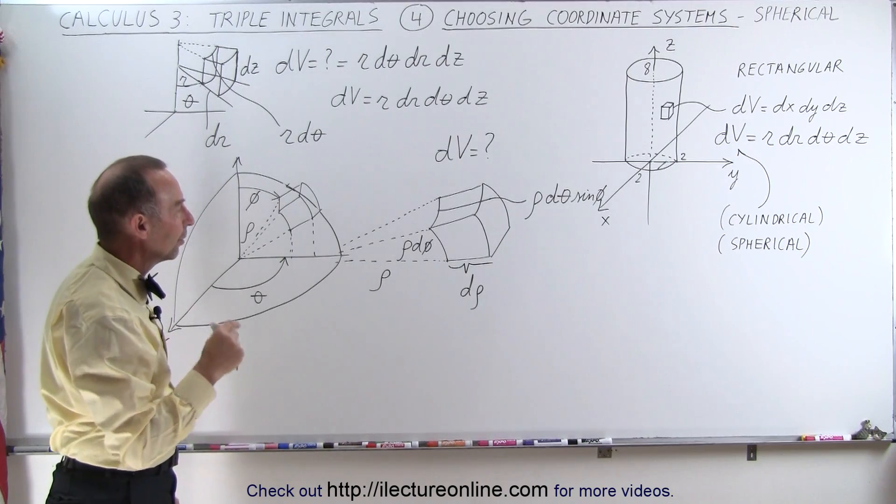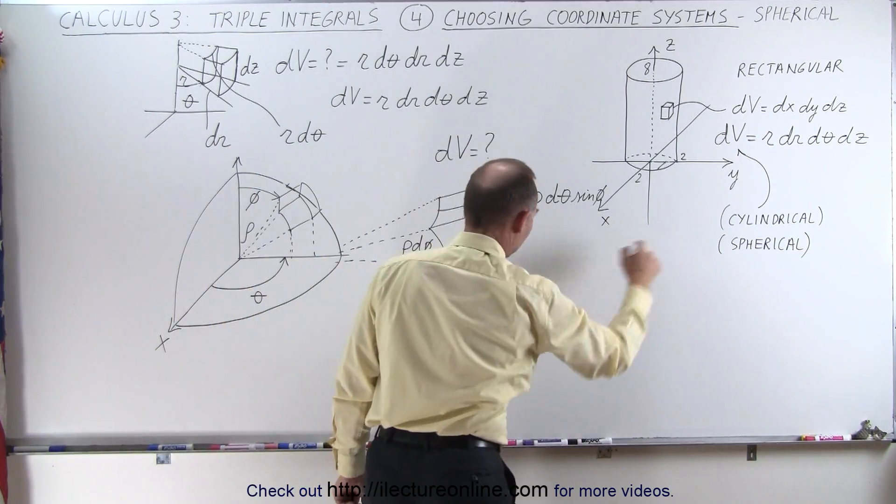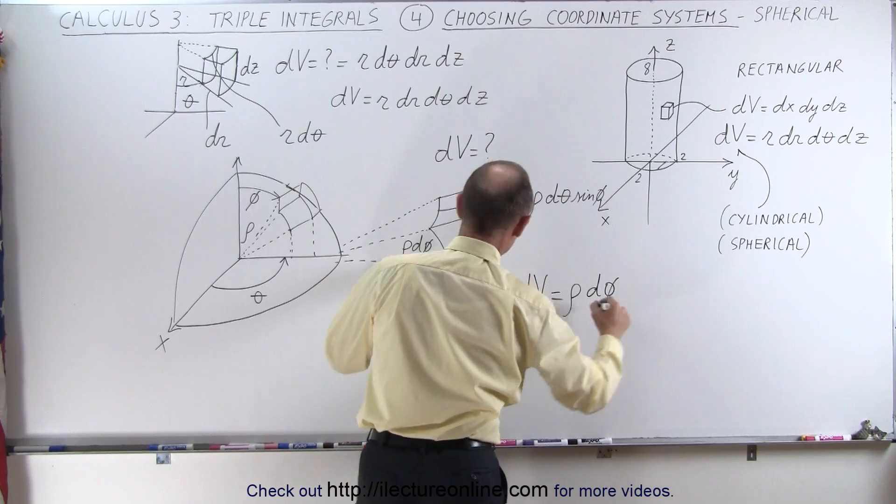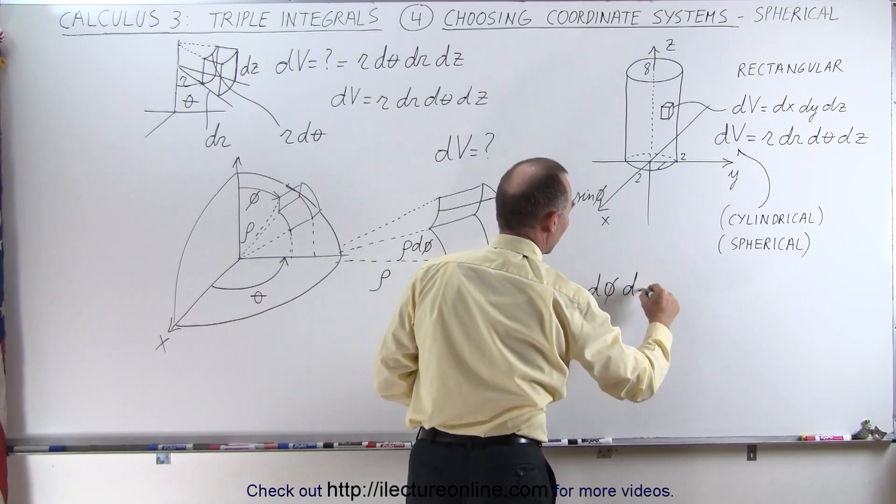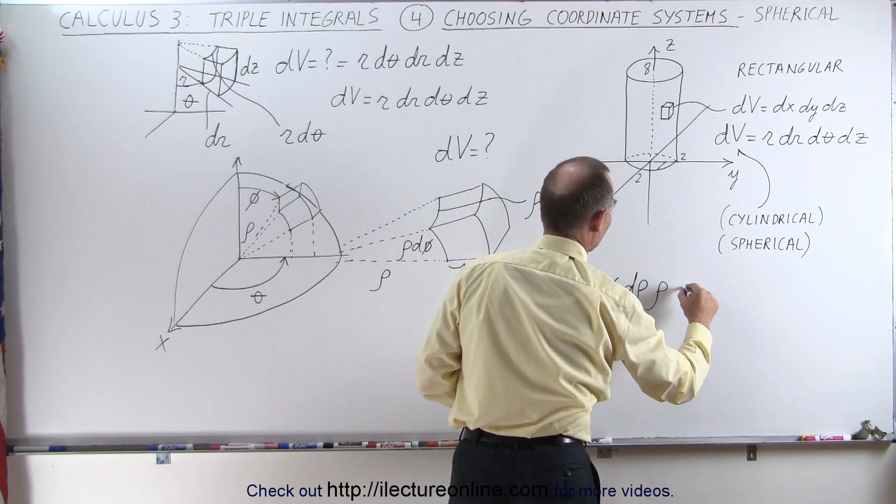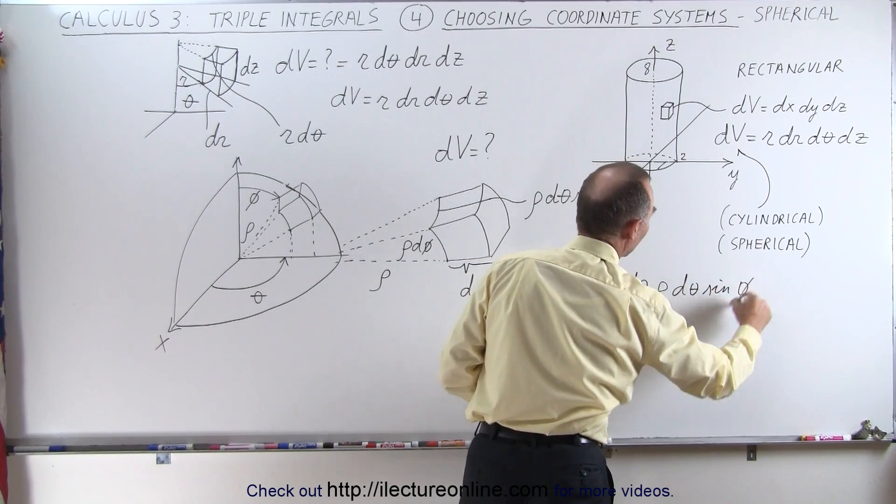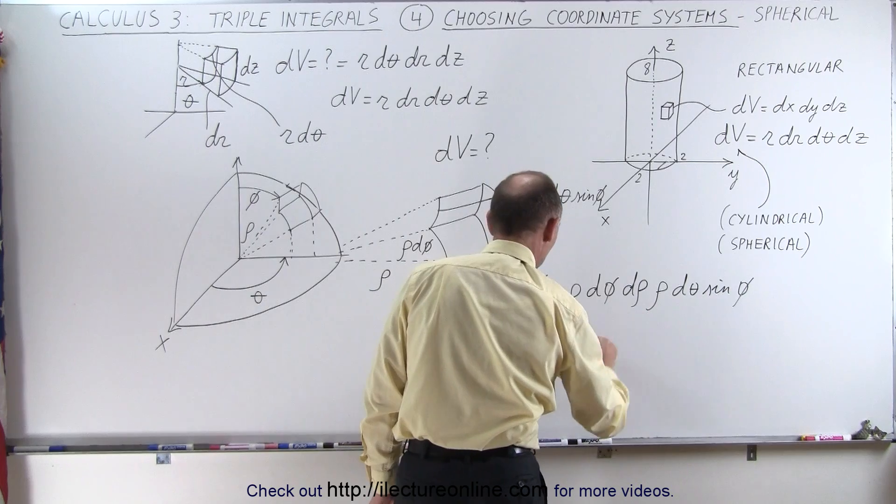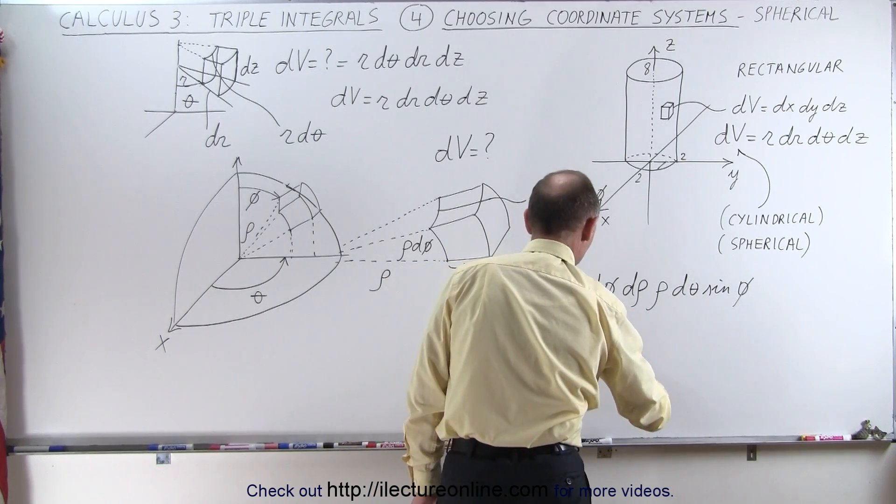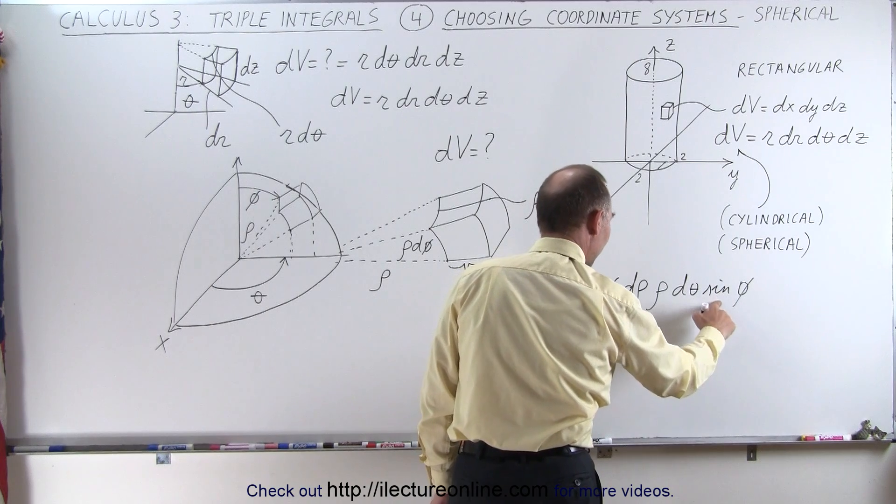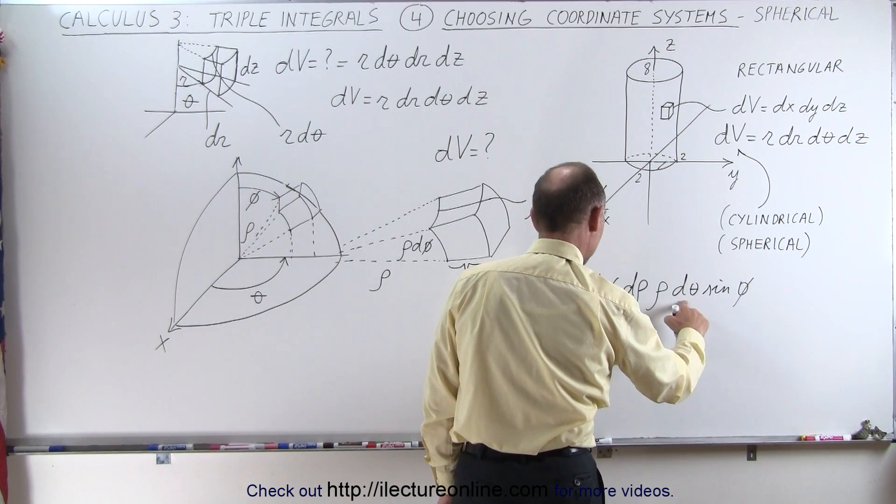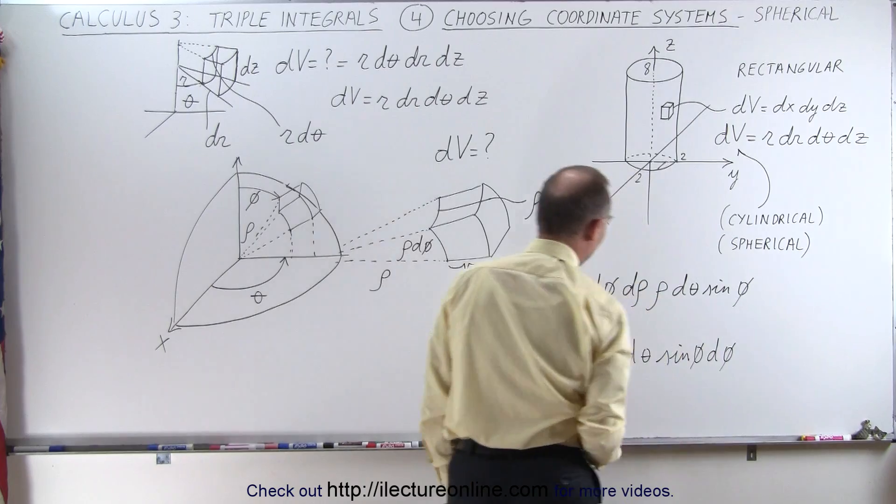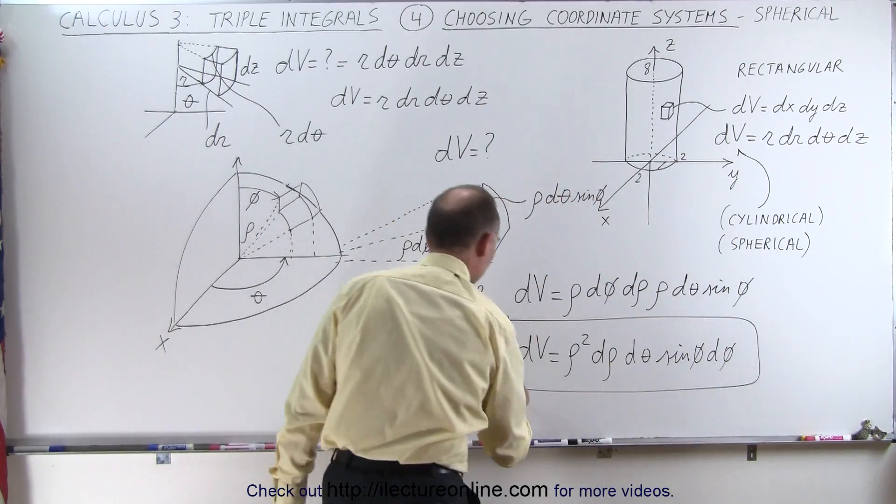And so now we have the proper portions here to make up a volume element in spherical coordinates. So we have dv is equal to, well, we have rho times d phi for this, times d rho times rho d theta sine of phi. And then typically we rearrange those in the proper order. We can then say that dv is equal to rho times rho, which is rho squared, times d rho, times sine, d theta, times the sine of phi d phi. And so that would be one way in which we can order the elements.